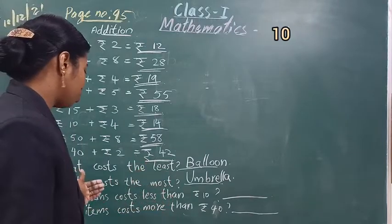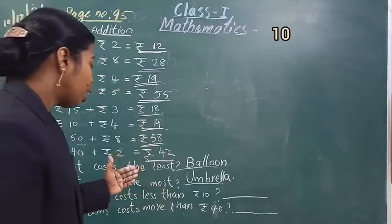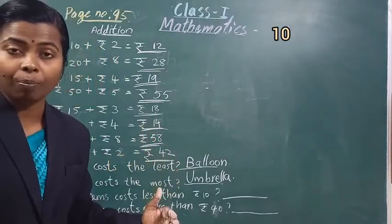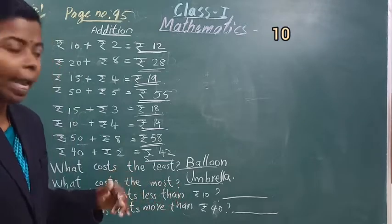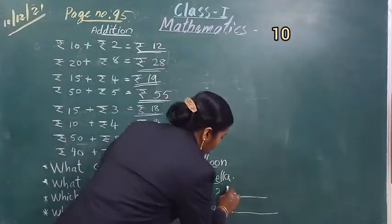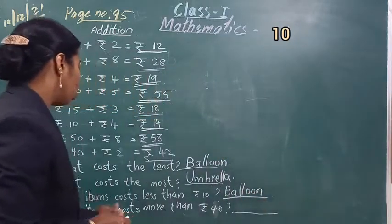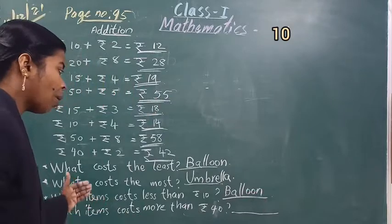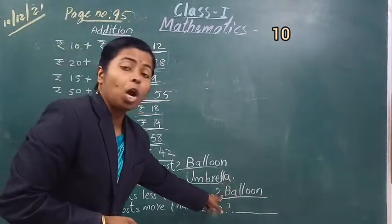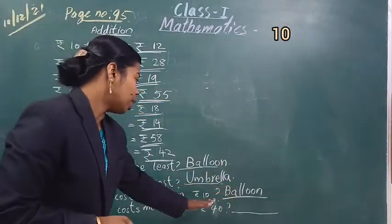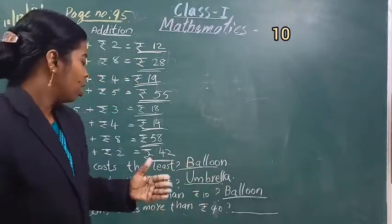The next question: which items cost less than 10 रुपीज? 10 रुपीज से कम price कौन सा चीज़ का है? Balloon. Balloon का price 5 रुपीज है — 10 से कम है. Yes.